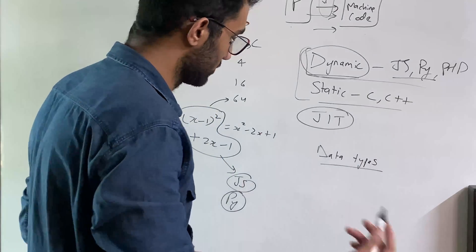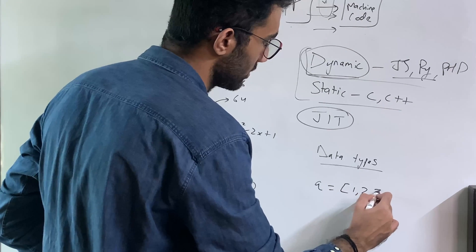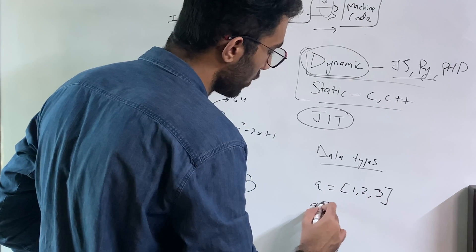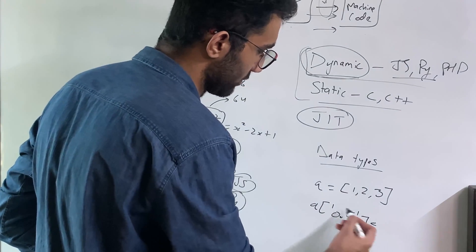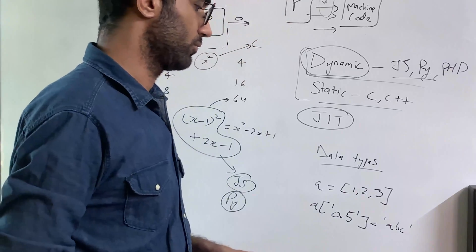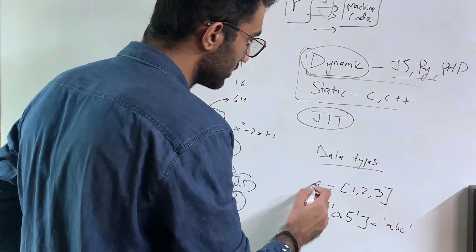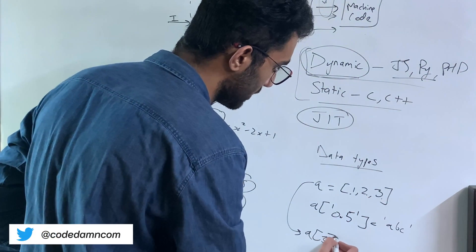For example, in JavaScript, you can have an array like this and then you can have a property on this array with a 0.5 as the index or a string and you can set this to some alphabets or whatever. Or you can also access an array of 0, 1, 2, 3, or 4, for example.